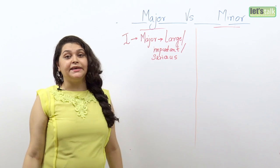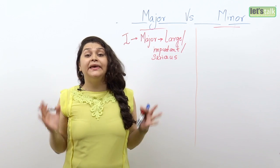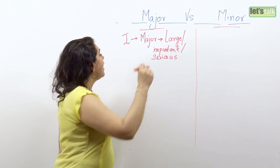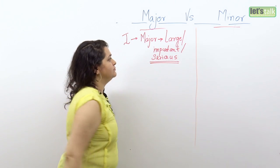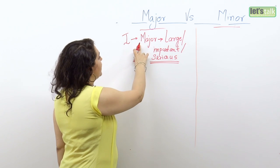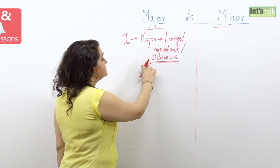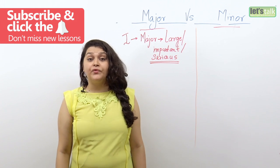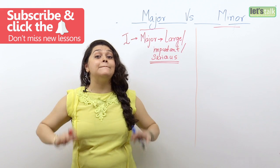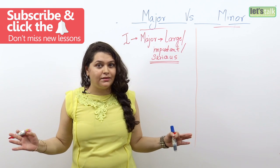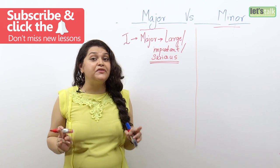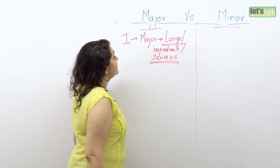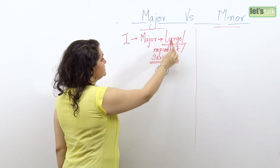So if I say I have a major problem, it means I have a serious problem — this is where the word major means serious. Now if I say something like my friend heads a major company, which means my friend heads a large company. That's where the word major means large.